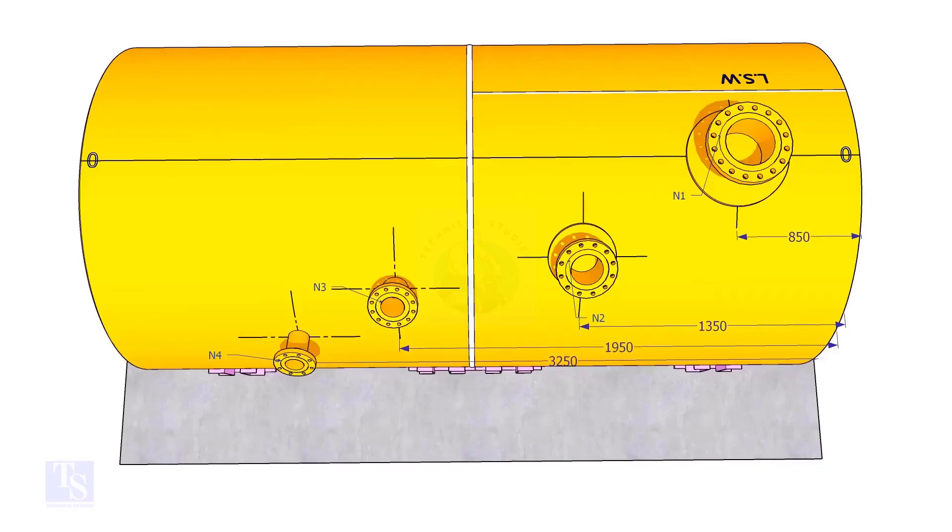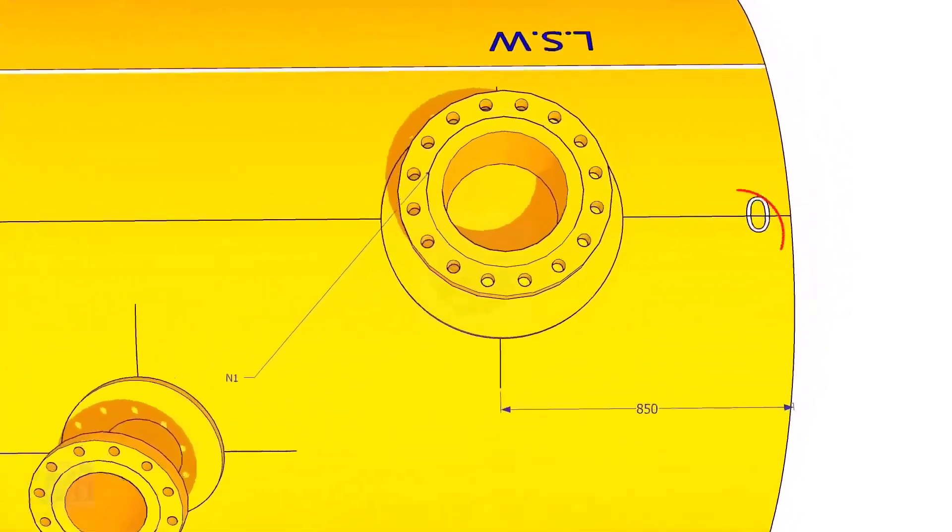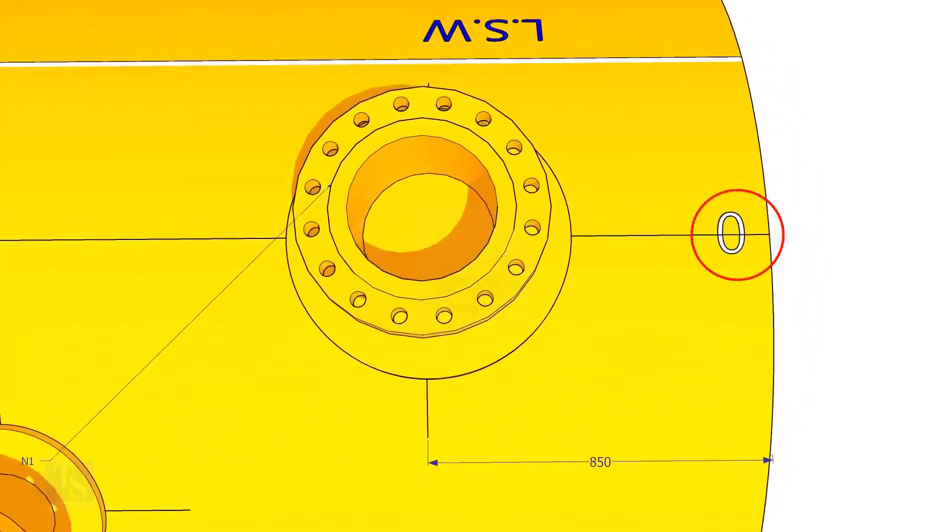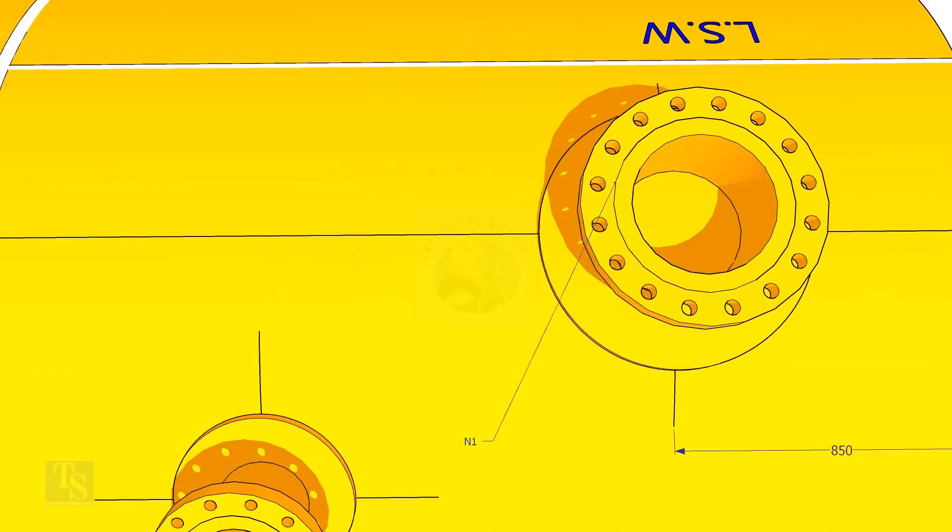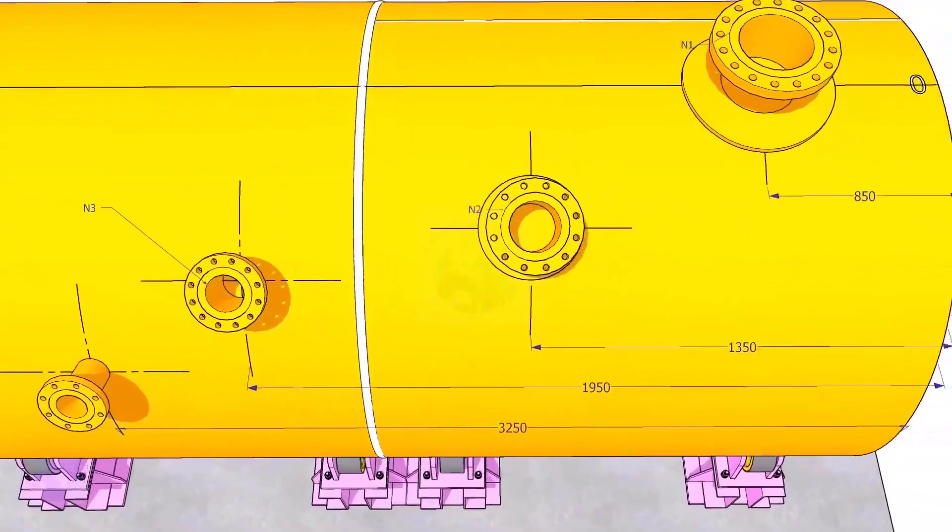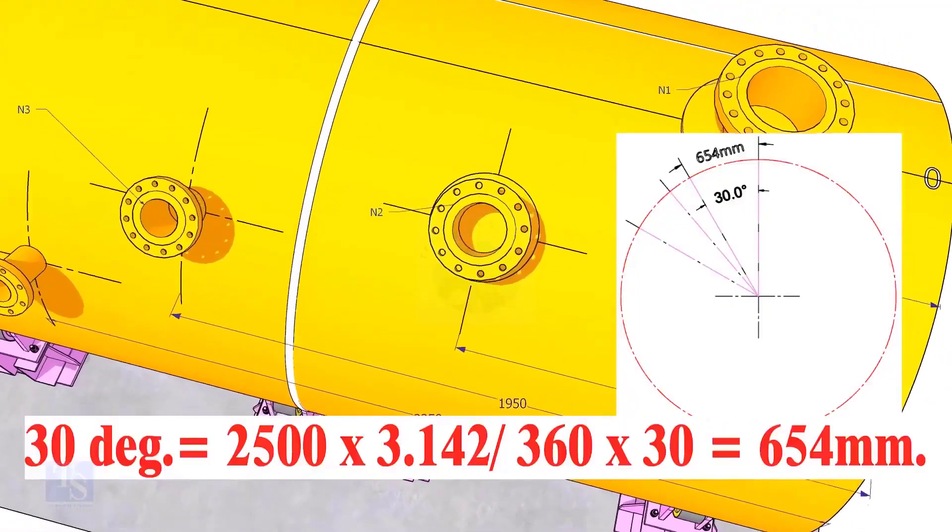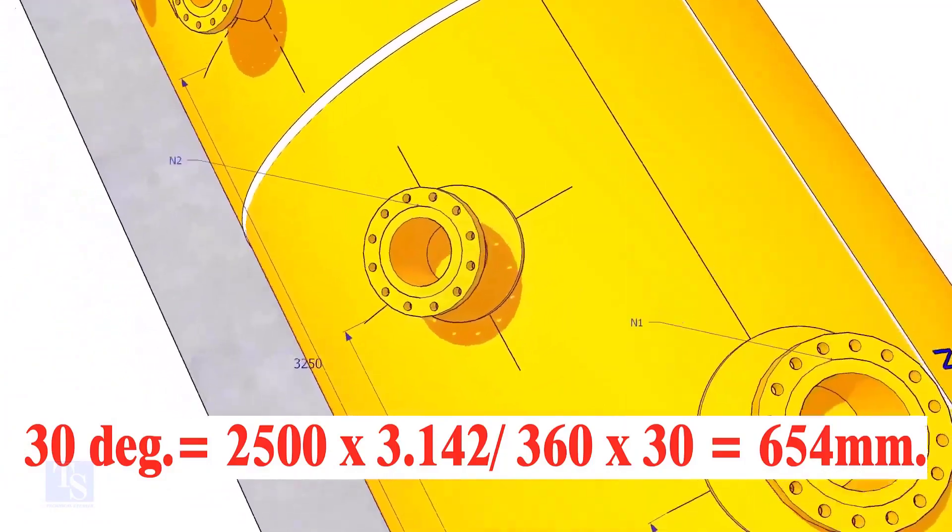Extend the nozzle N1 center line up to the other end of the shell and mark it as zero-degree. Let us mark the center of nozzle N2. It comes on 30-degree anticlockwise. Convert 30-degree to arc length.